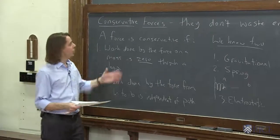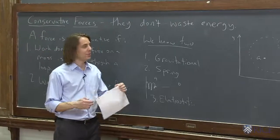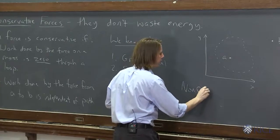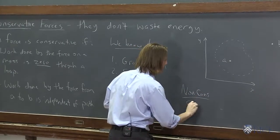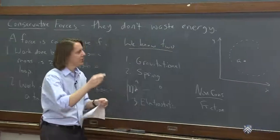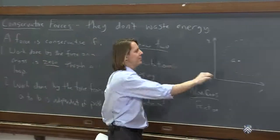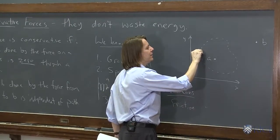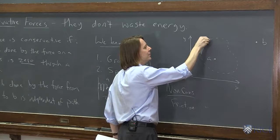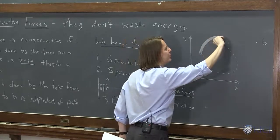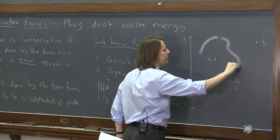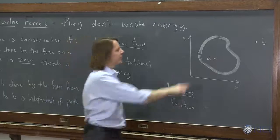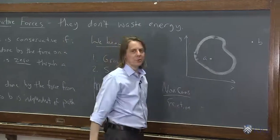Examples of non-conservative forces are ones that do waste energy, and of course the one we can think of is friction. Let's think about the friction force as I go around the loop. We'll start here, and the friction force is pushing back — the system is losing energy. I'm having to push, and I'm losing energy the entire way around. I never gained. The net work was not zero going around the loop — I always lost.